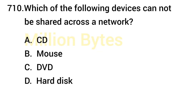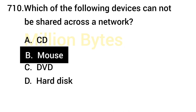Which of the following devices cannot be shared across a network? The answer is Mouse. CD, DVD, and hard disk can be shared across a network, except Mouse.